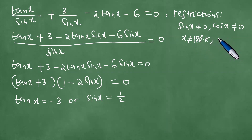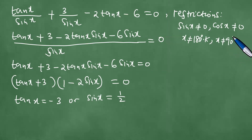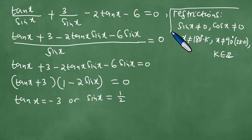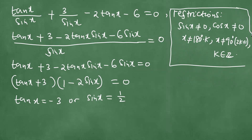Also, the tangent of x has cosine x in the denominator, which means cosine x should not be 0, otherwise the equation is undefined. When cosine is not 0, it means x is not equal to 90 degrees times (2k + 1), where k is an element of the set of integers. These restrictions are extremely important when solving rational trigonometric functions.